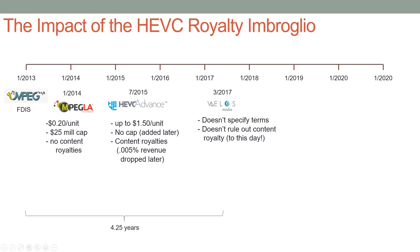VELAS came after the Alliance for Open Media, but four and a half years after people started using the codec, they came out with a different pool which presumably has royalties somewhere between HEVC Advanced's initial terms and the new cap for HEVC Advanced, which is now $40 million.